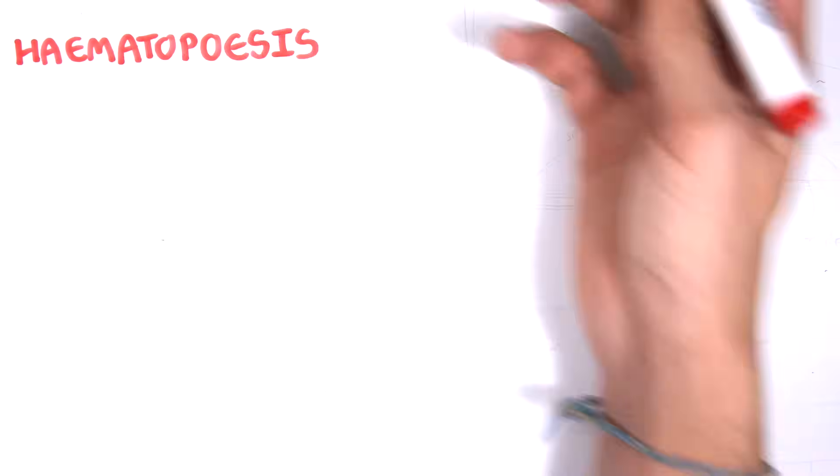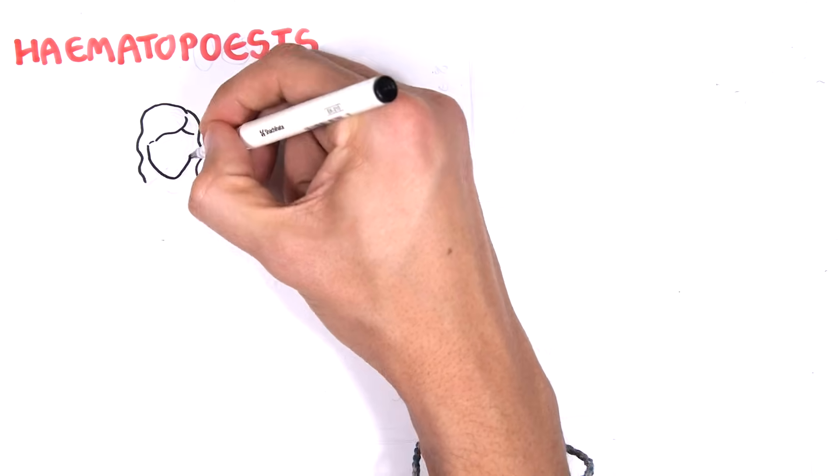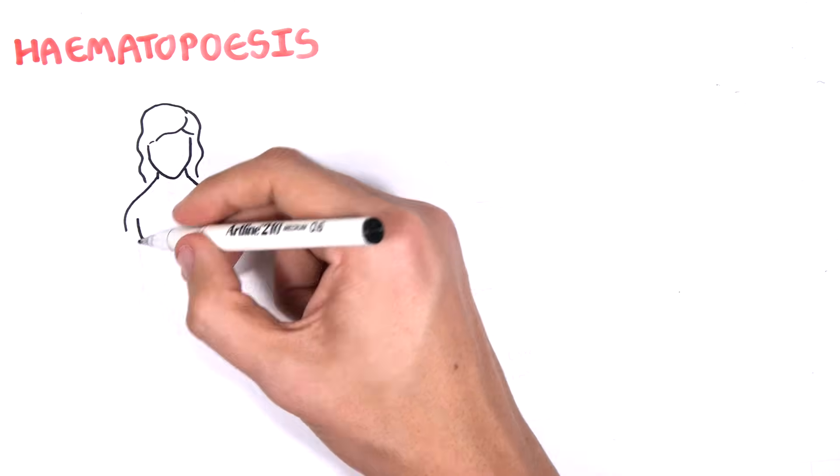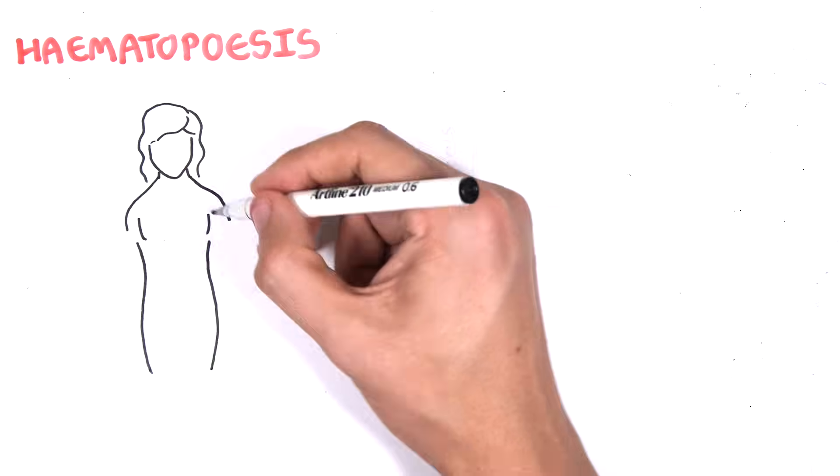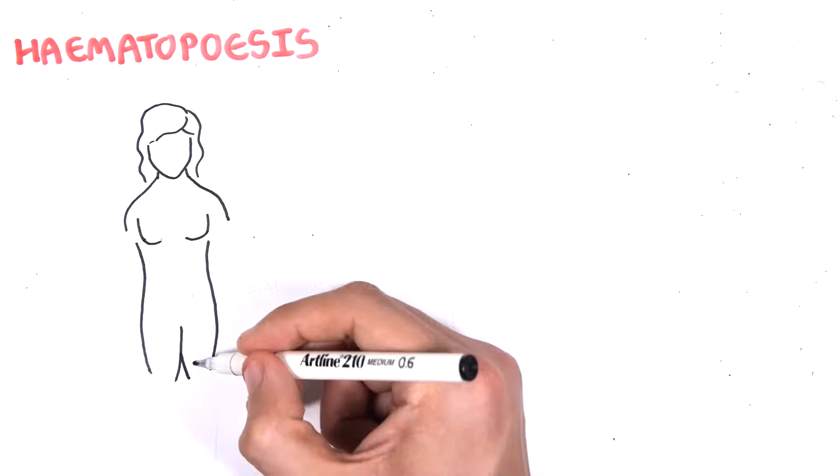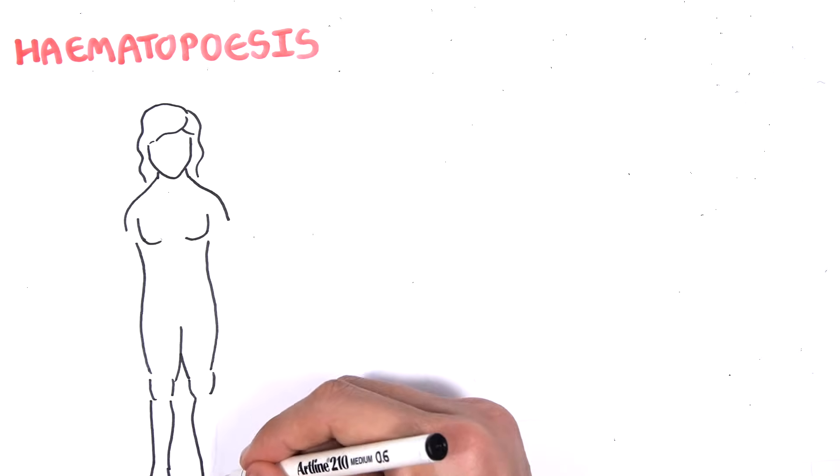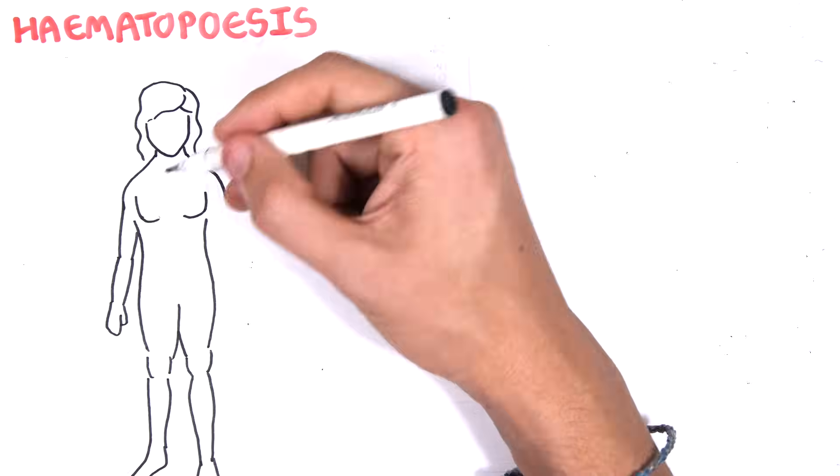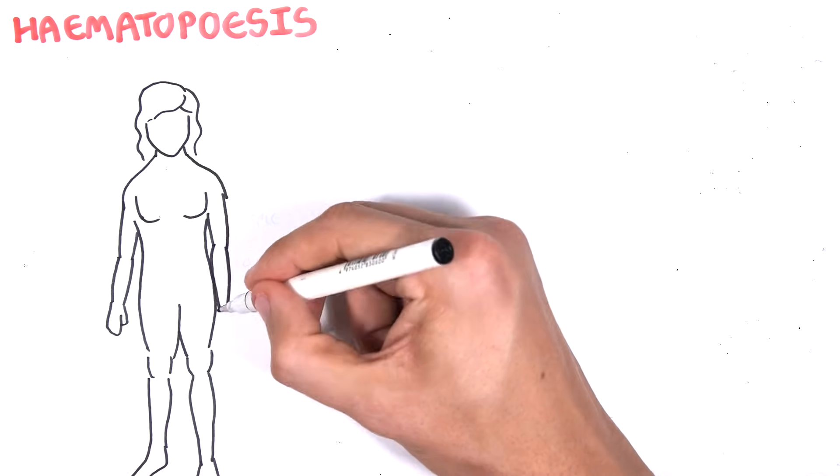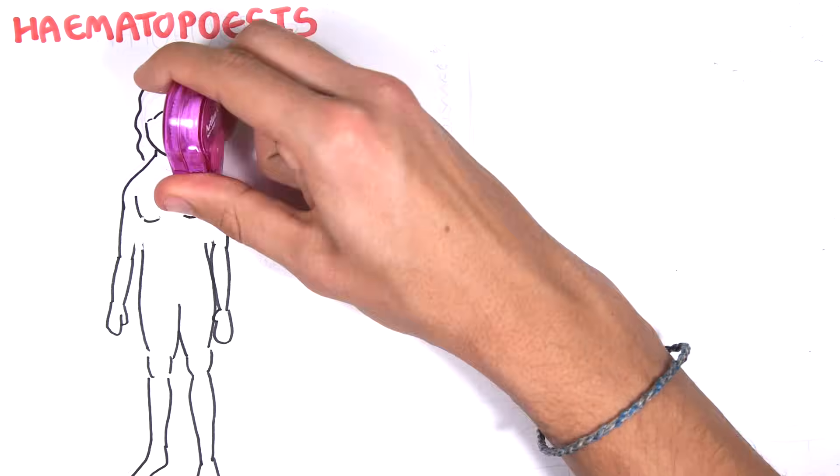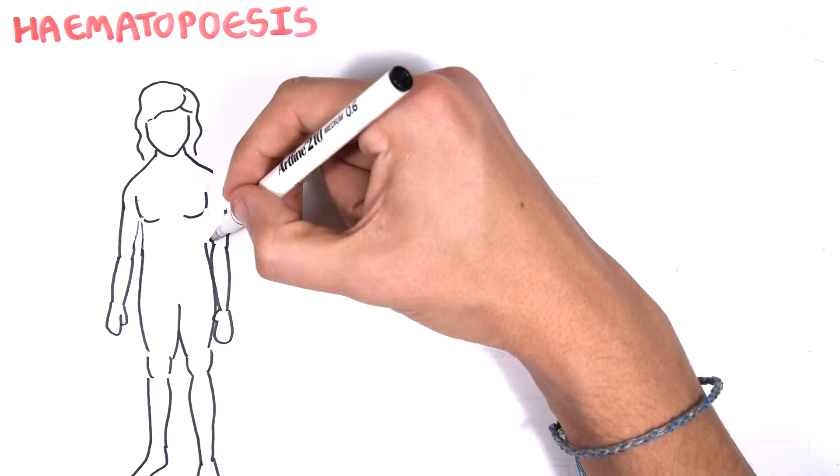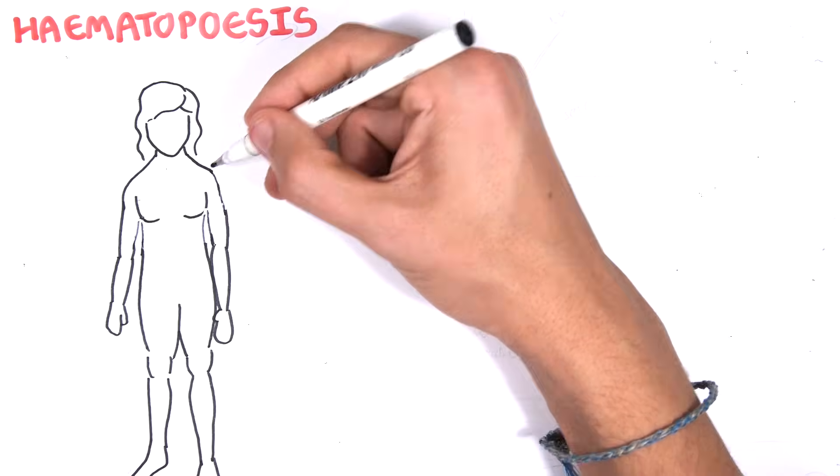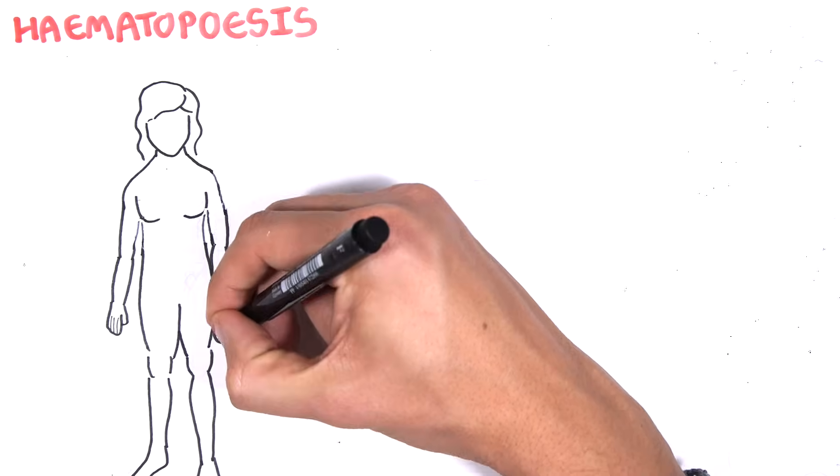Hello, in this video we're going to talk about hematopoiesis. Hematopoiesis, as the name suggests, hemato refers to the blood, and poiesis is formation of. Hematopoiesis refers to the commitment and differentiation process of a stem cell to the different types of cells we found in the blood, for example, our red blood cells.